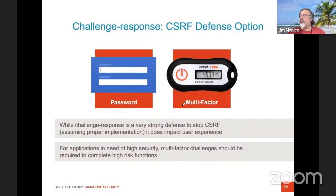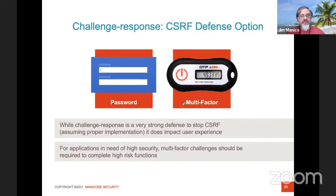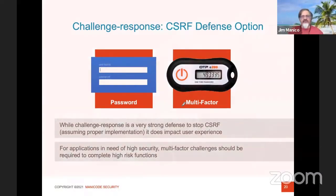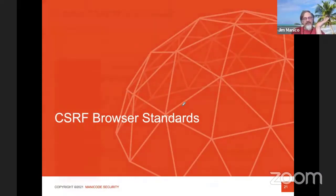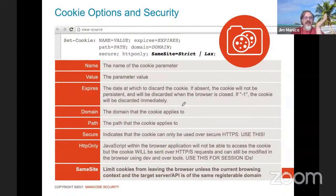Another defense is challenge-response: if I'm going to transfer money, force the user to re-authenticate. This alone does a really good job at stopping request forgery, and it's another defense we can add at sensitive transaction boundaries.